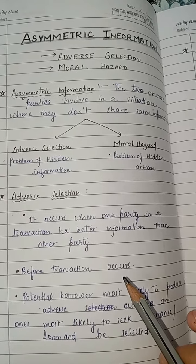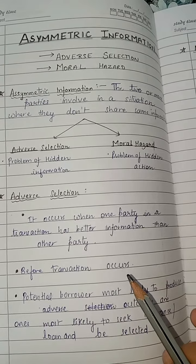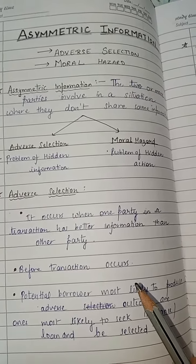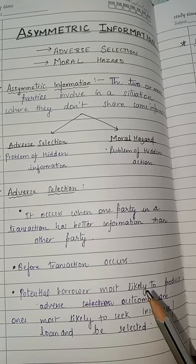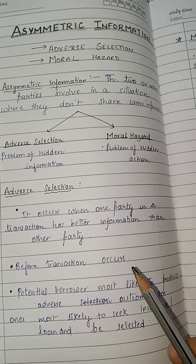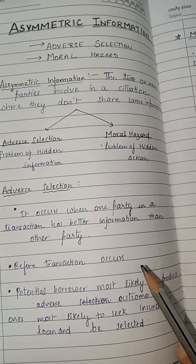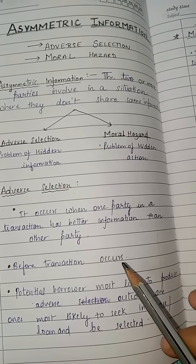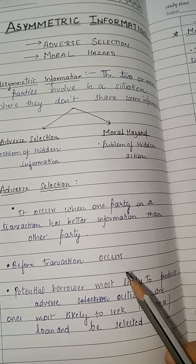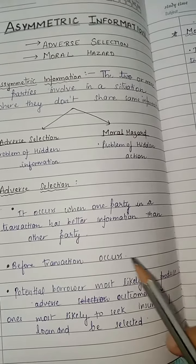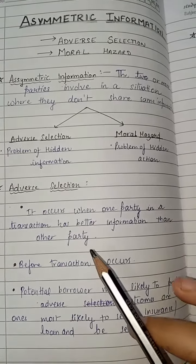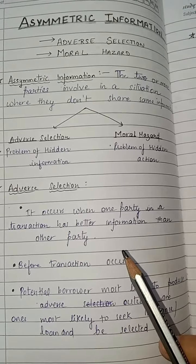For example, in adverse selection, if a person is going for health insurance, it might be the case that they do not give proper information about their health to the insurance company. What can happen is that the insurance company ends up covering costs more than the actual cost — that is adverse selection.